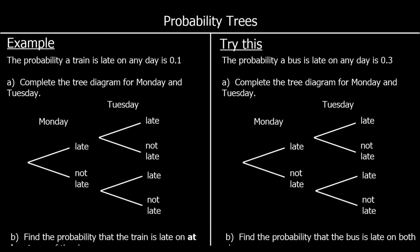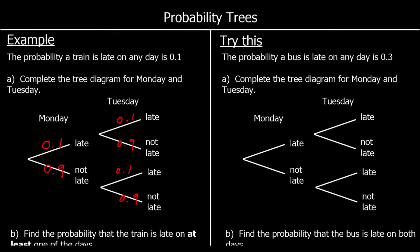Here we have another question. The probability that a train is late on any day is 0.1. Complete the tree diagram for Monday and Tuesday. So if the probability of it being late is 0.1, the probability of it not being late is 0.9. And that's the same on every day, so on Tuesday the probability of it being late is 0.1 and the probability of it not being late is 0.9.